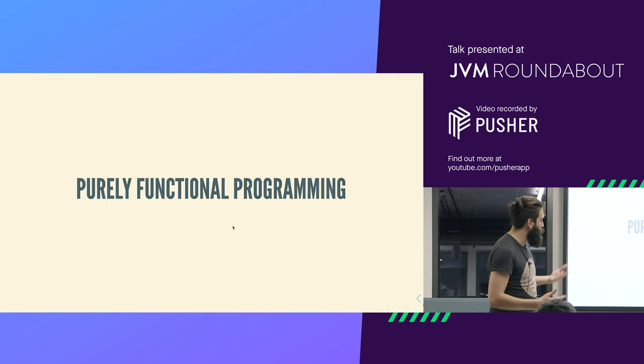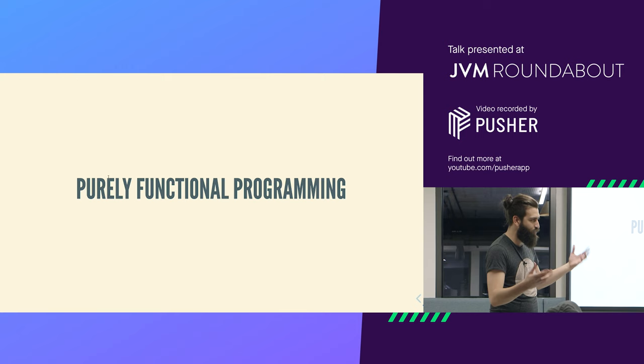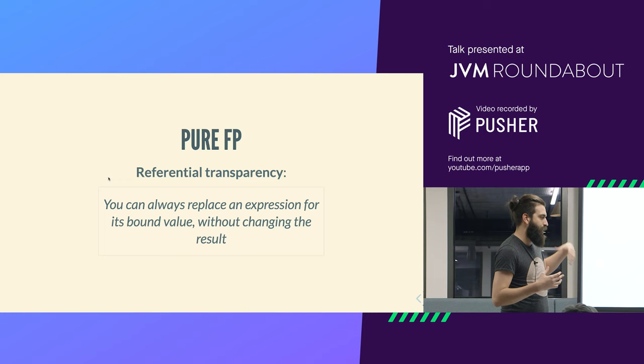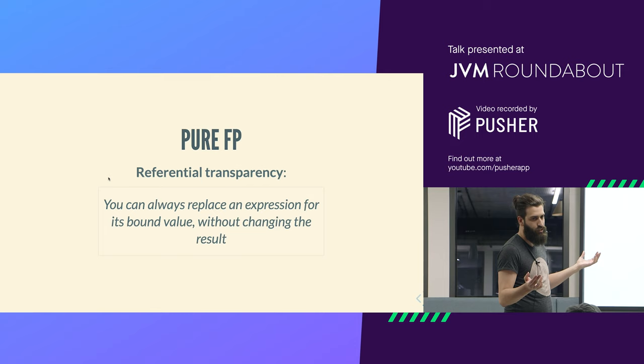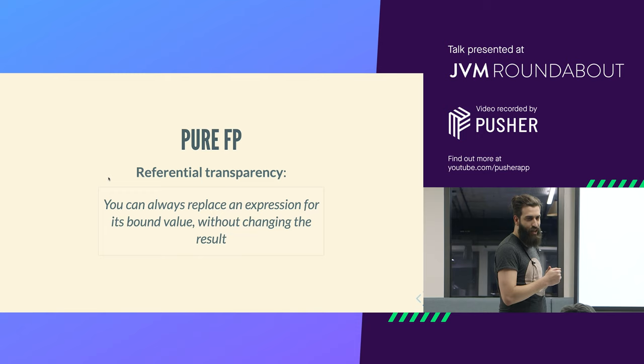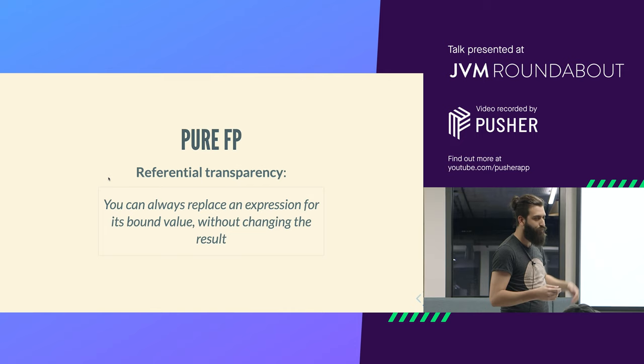So purely functional programming - what is this thing? There's a lot of misconception around about not doing side effects, not writing to disk, so how do you even do this stuff? As it turns out, most of the problems are with an incorrect definition. The whole idea is based around this property called referential transparency, which means you can always replace an expression for its bound value without changing the result. This might look like a pretty hard thing, but actually it's something we're all already familiar with from basic math at school. If x plus 2 equals 3 and x is 4, you just replace 4 wherever you see x and then reduce. All that this is saying is that you want to be able to do the same thing with your programs.